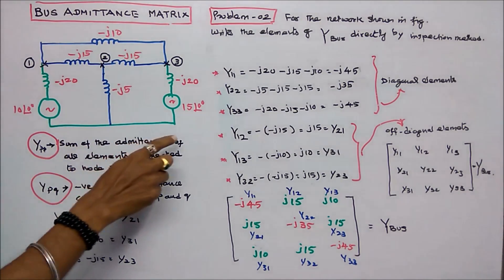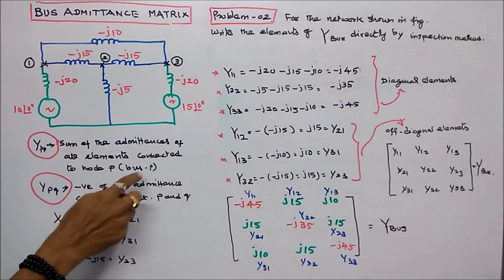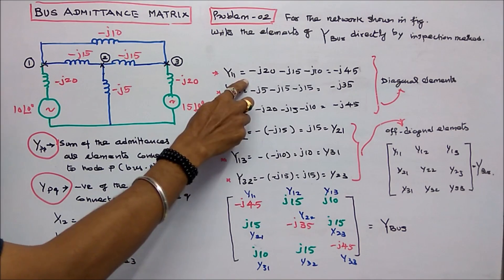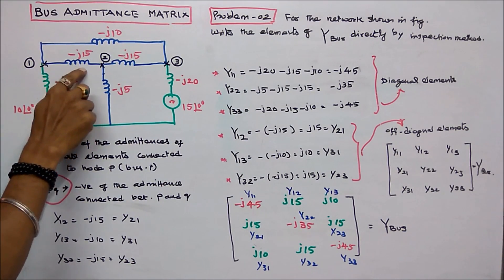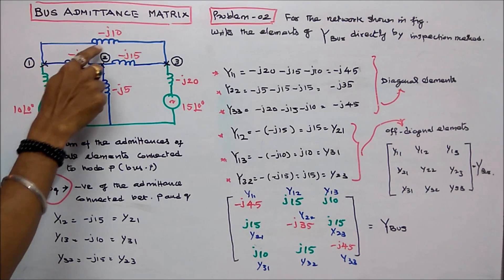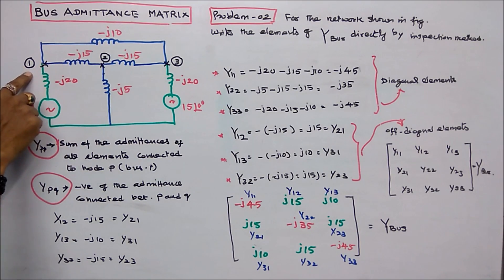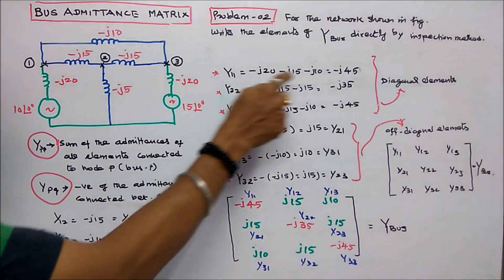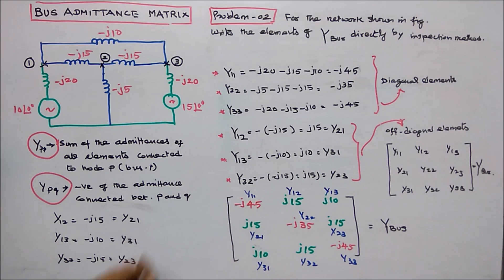YPP equals the sum of admittances of all elements connected to node P. Y11 equals minus J20 minus J15 minus J10, as three elements are connected at node 1. Therefore Y11 equals minus J45.